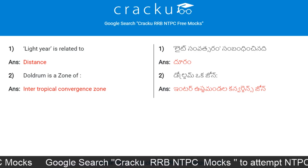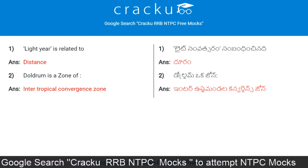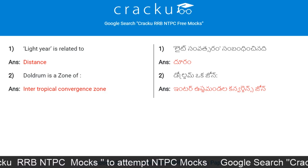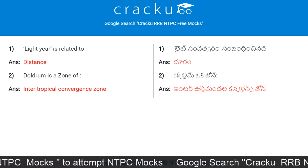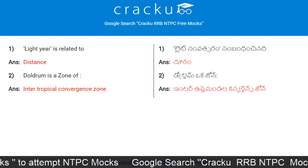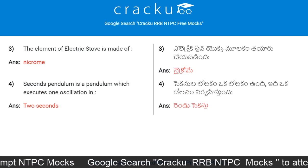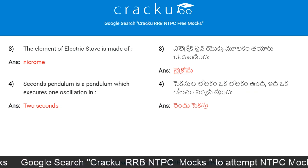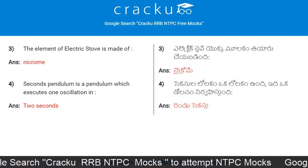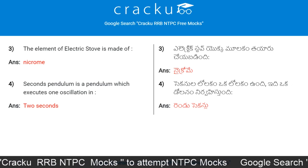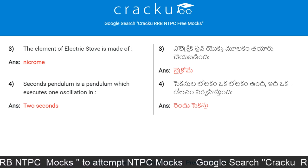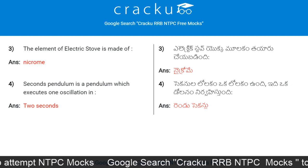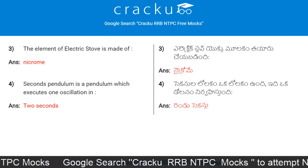Today's first question: a light year is related to distance. Doldrum is a zone of intertropical convergence zone. The element of an electric heater stub is made up of nichrome. A seconds pendulum is a pendulum which executes one oscillation in two seconds.